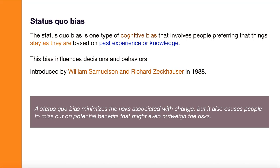So what is the status quo bias? It's very simple — the status quo bias is a type of cognitive bias that involves people preferring that things stay as they are, based on past experiences or knowledge. They choose something they are already aware of, they don't want to change anything, they prefer that everything stays the same. This bias considerably influences the decisions and behaviors that humans make.